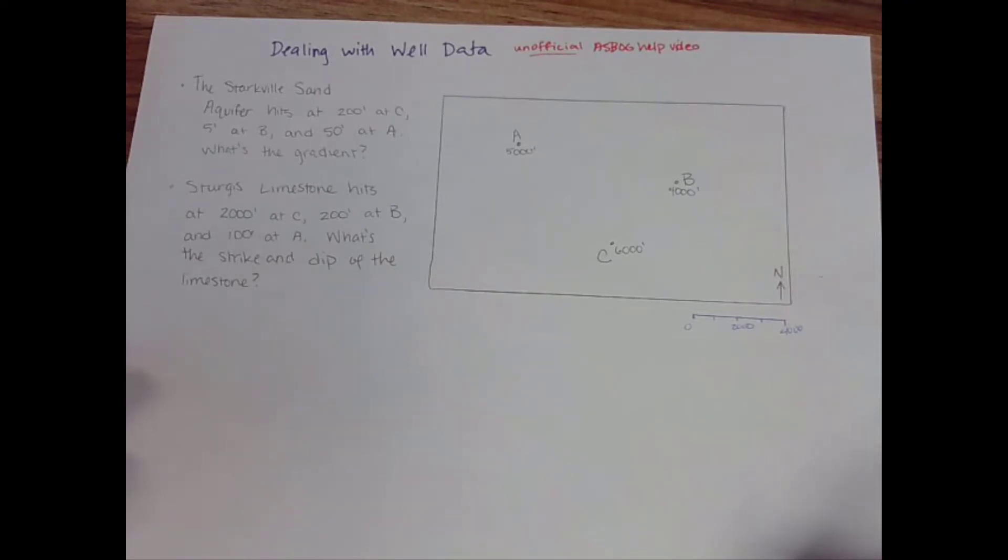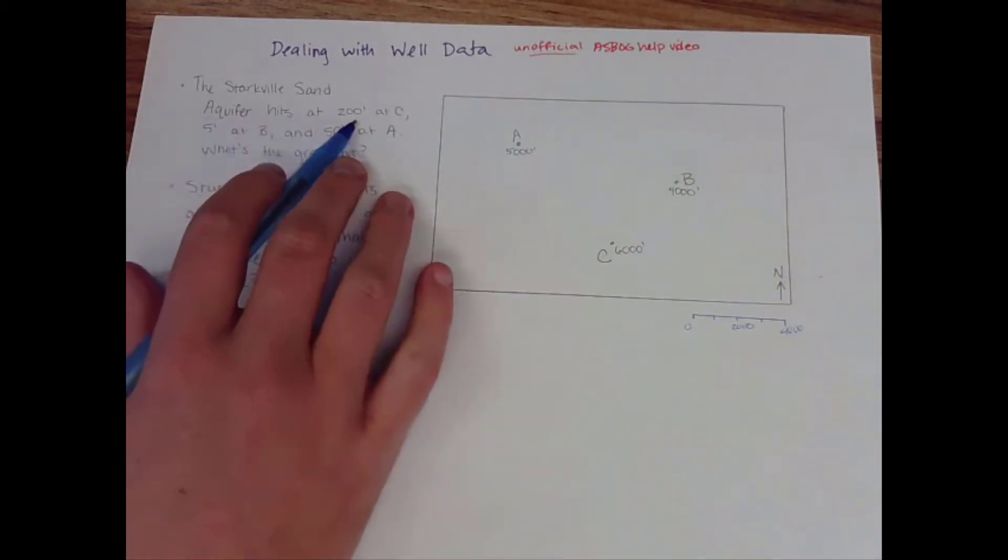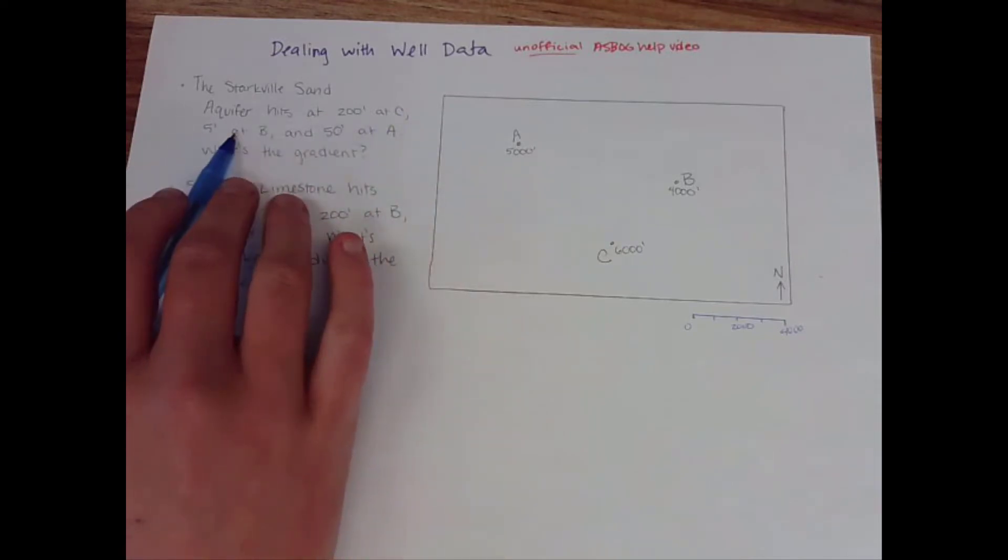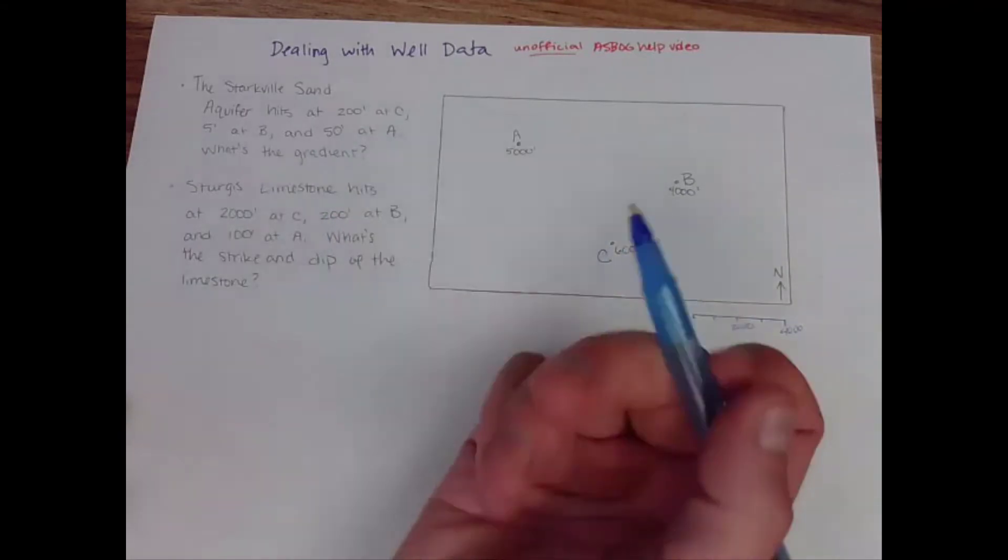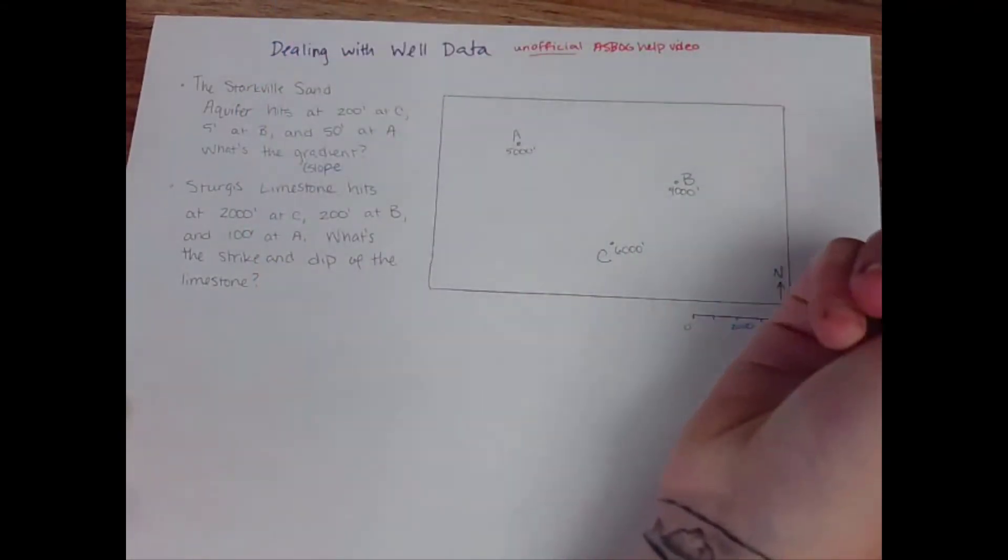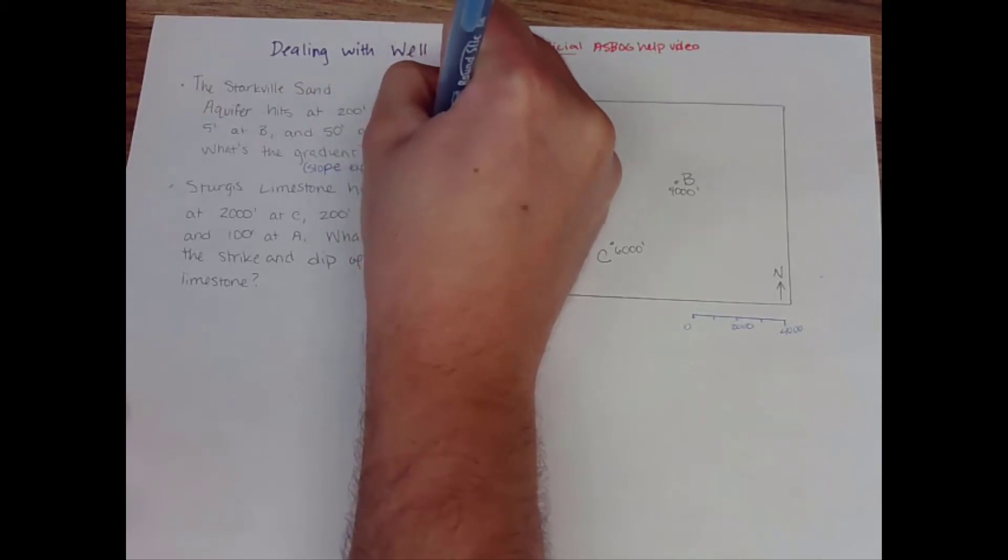Okay, so this asks what is the gradient of this aquifer if it's going to hit at 200 feet below ground at C, 5 feet below ground at B, and 50 feet below ground at A. By gradient what this means is slope expressed as a decimal. So rise over run.